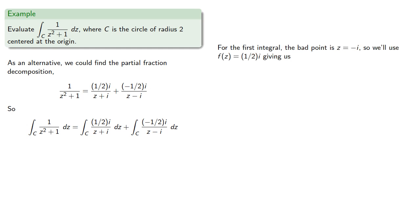So for the first integral, the bad point is z equals negative i. So we'll use f(z) equals one half i, which gives us 2πi times (1/2i) equals π.